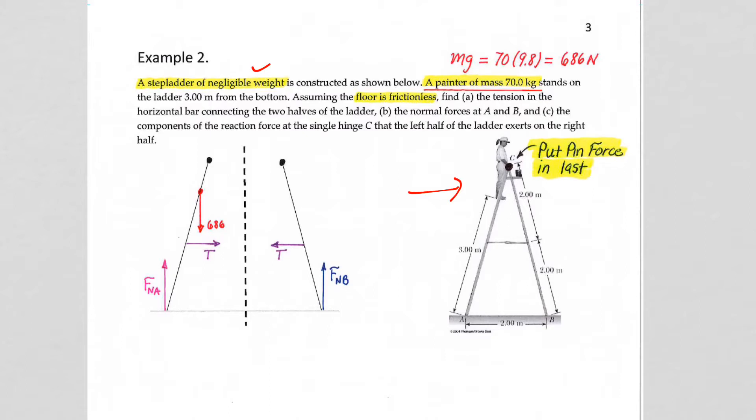The stepladder of negligible weight has a painter of mass 70 kilograms. Kilograms is mass, so the weight force is 686 newtons. It is a 4-meter-long ladder, and the painter is at the 3-meter spot very near the top.